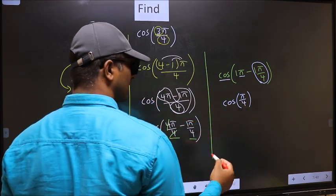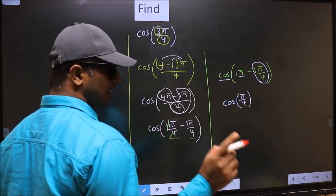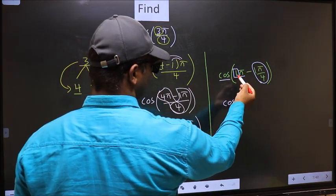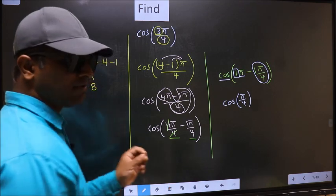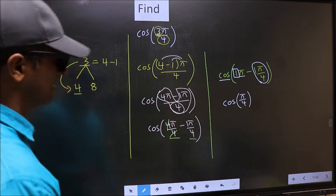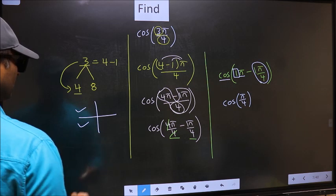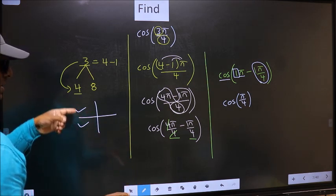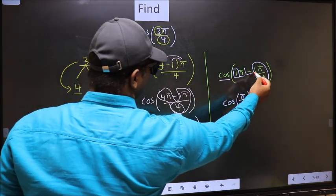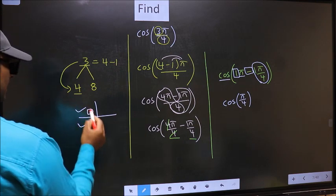Now the question arises, will we get here plus or minus? To answer that, you should look at the number before π, which is 1. And 1 is odd. And all the odd multiples of π, they lie either in the second or in the third quadrant. So now to check which quadrant does it lie, we should look at this symbol. Here we have negative.